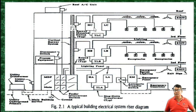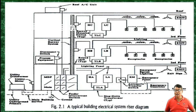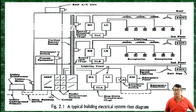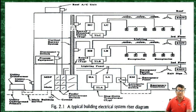In the riser diagram, the MDP is the main panel, with distribution feeders for each floor. There is a power supply going to auxiliaries. For each floor — first, second, third, and so on — panel boards are shown. On the first floor or basement, the emergency generator is located along with its panel boards and the automatic transfer switch (ATS). The ATS transfers power either from the generator or from the utility to the loads.